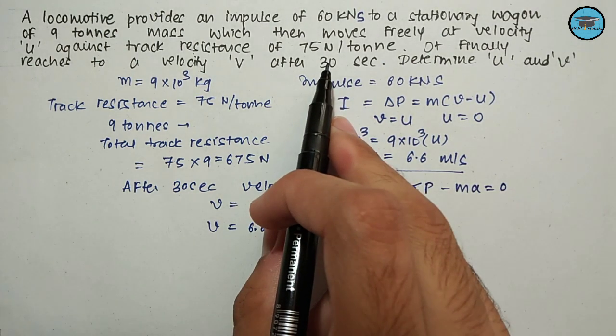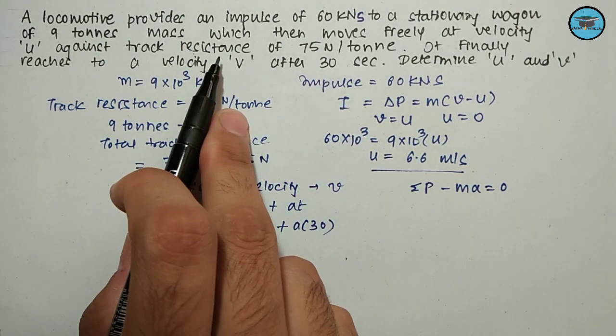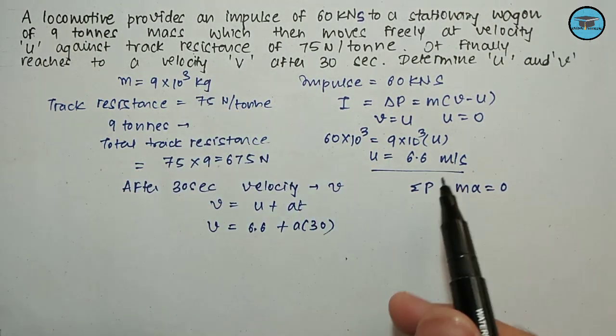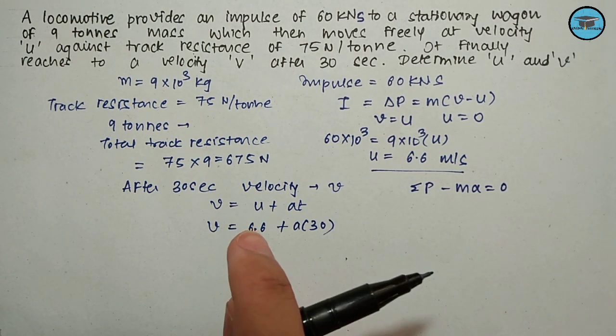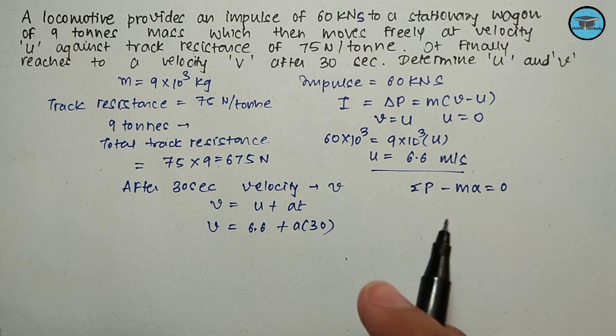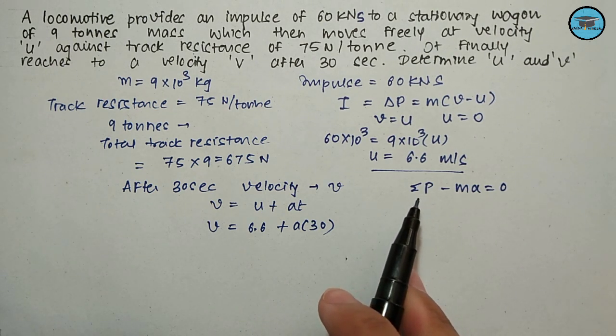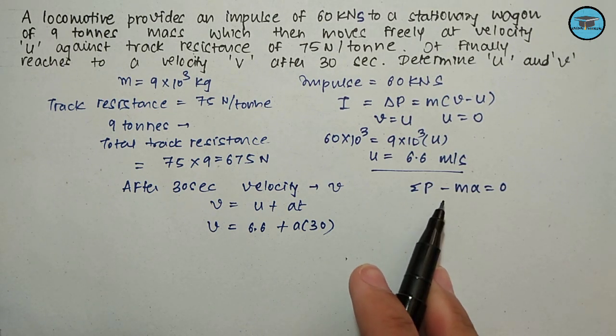There is only frictional force acting, that is track resistance acting on the body, so ΣF will be negative as it opposes the motion. While applying D'Alembert's law, we consider forces acting in the direction of motion as positive, so the frictional force will be negative.